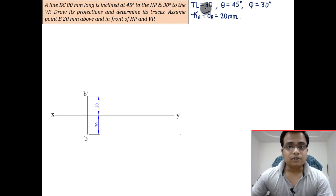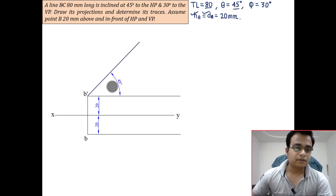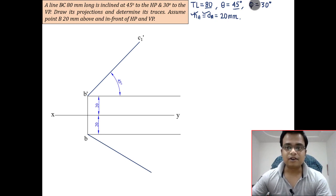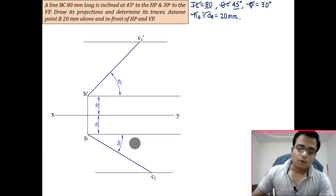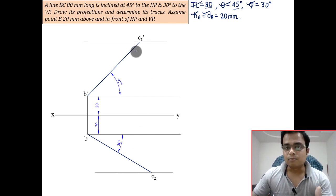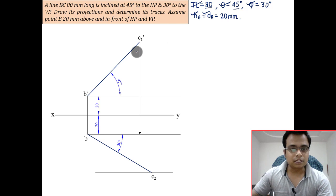What we can do is make this 80 millimeters along with 45 degrees theta, and this is again 80 millimeters but with an angle phi 30 degrees. Now, in order to make the final projection, produce a line from C1 dash which is going to hit somewhere here, and this is going to be the corresponding top view of C1 dash.